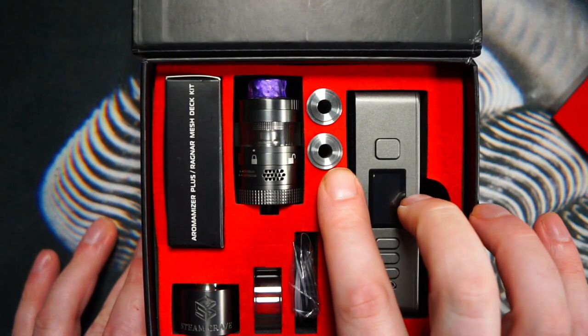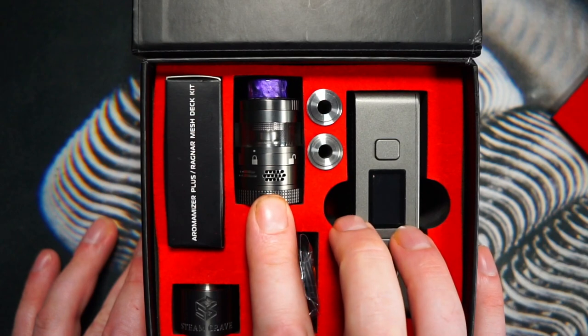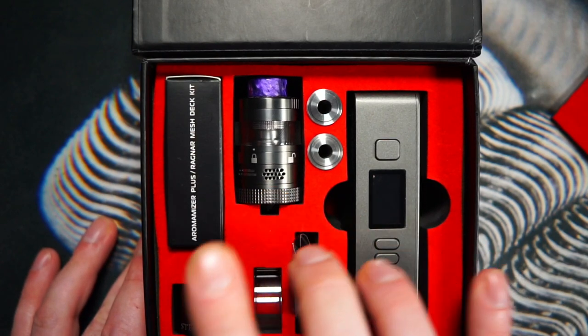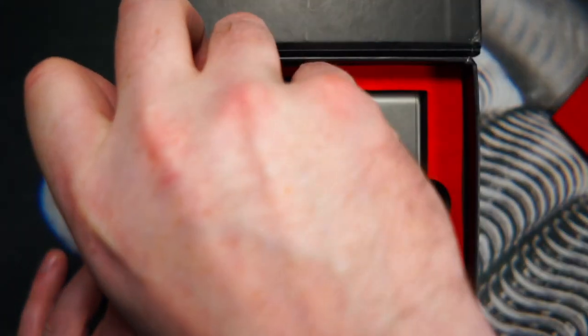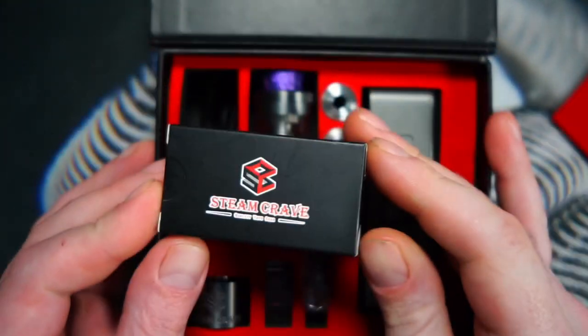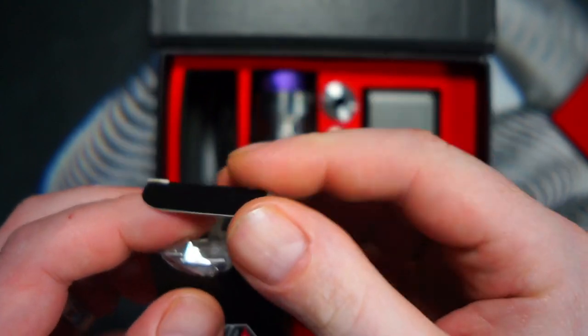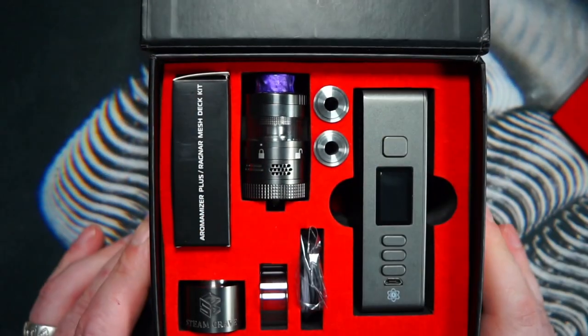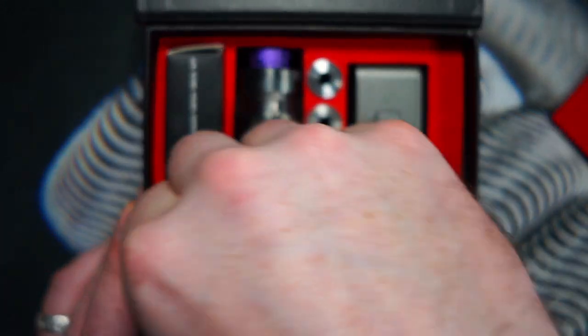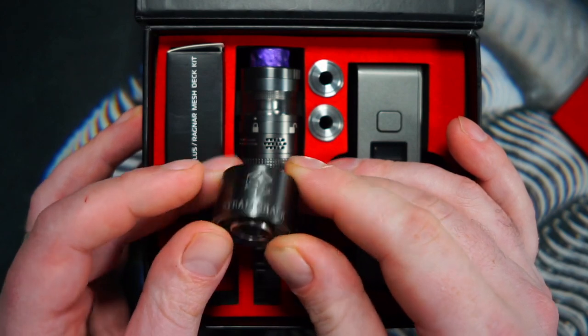We'll open her up. So we have the mod. We have two airflow reducers. Both of these are 6mm, which is a bit strange. I thought they might go for different sizes, but both of these are 6mm. You have your Aromamizer Plus Version 2 RDTA. You have Aromamizer Plus/Ragnar Mesh Deck Kit. As a coil builder, I'm really not a fan of mesh. Rebuildable mesh in particular, I'm not a fan of. We won't be using this because, to be honest with you, I find rebuildable mesh decks in general to be pretty pointless when you can put in a decent set of coils and get a better vape. But I won't go too far into that. There's an extension piece here so you can screw this onto the RDTA, and this will bump your capacity from 8ml to 16ml, which is pretty cool.